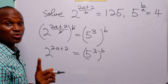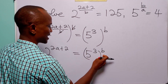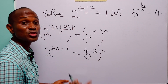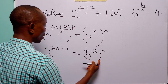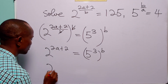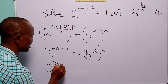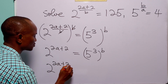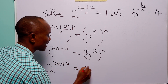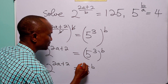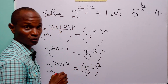Now, remember that when we have two powers like this, we can switch their places. So ultimately, this gives us 2 to the power (2A + 2) equals 5 to the power 3B.